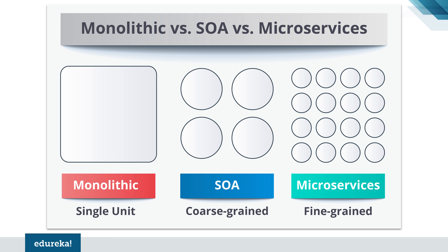The next challenge with monolithic applications is that development is very slow. They take a lot of time to be built since each and every feature has to be built one after the other. Most of all, monolithic applications are not fit for complex architecture because you cannot use different technologies — you are very limited and constrained. So that is the challenge with monolithic applications.